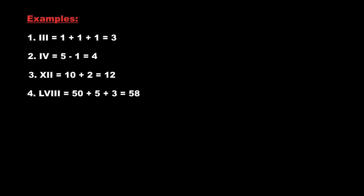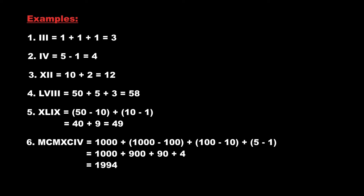For LVIII we have the value as 58. In the case of XLIX, the value of XL is 40 and the value of IX is 9, so the integer value is 49. Finally for MCMXCIV, the value of M is 1000, CM is 900, XC is 90, and IV is 4, so after adding all these values we get the final integer as 1994.